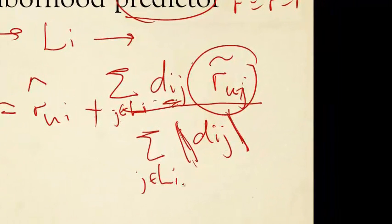But when we normalize by their size, we have to use the absolute value of dijs.